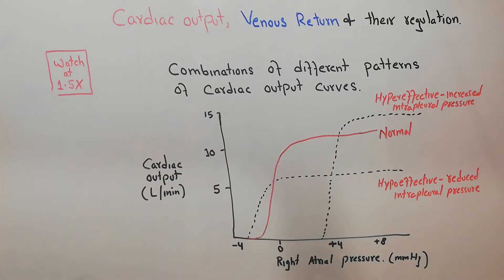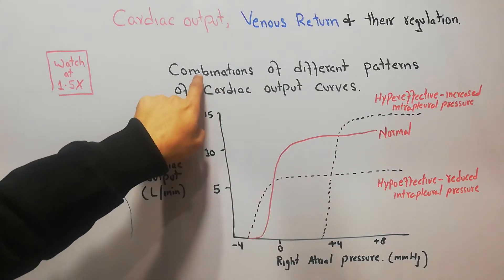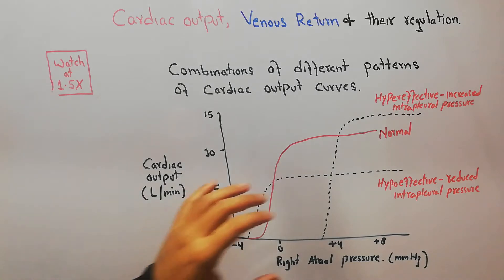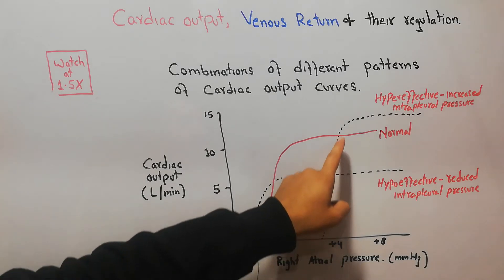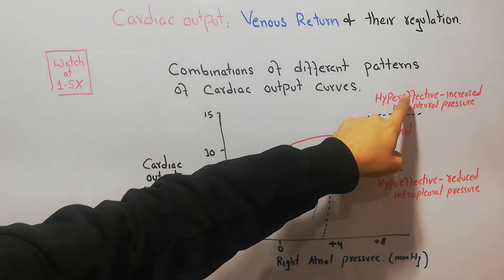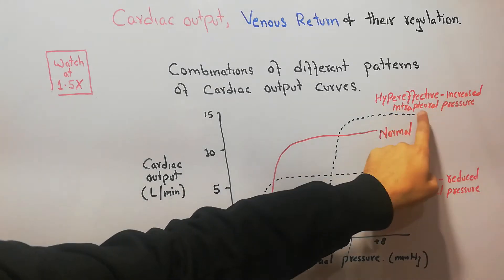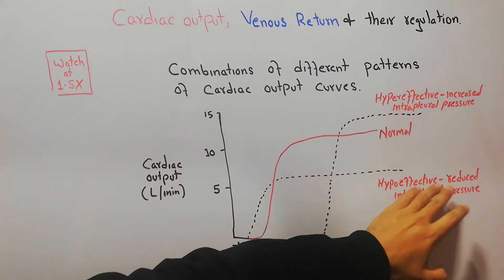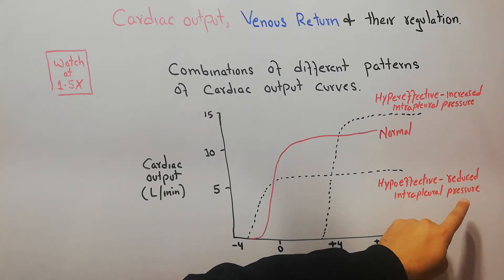Today we are combining different patterns of cardiac output curves that are not normal. We have drawn two different curves: one showing a hyper-effective heart with increased intrapleural pressure, and the other showing a hypo-effective heart with reduced intrapleural pressure.